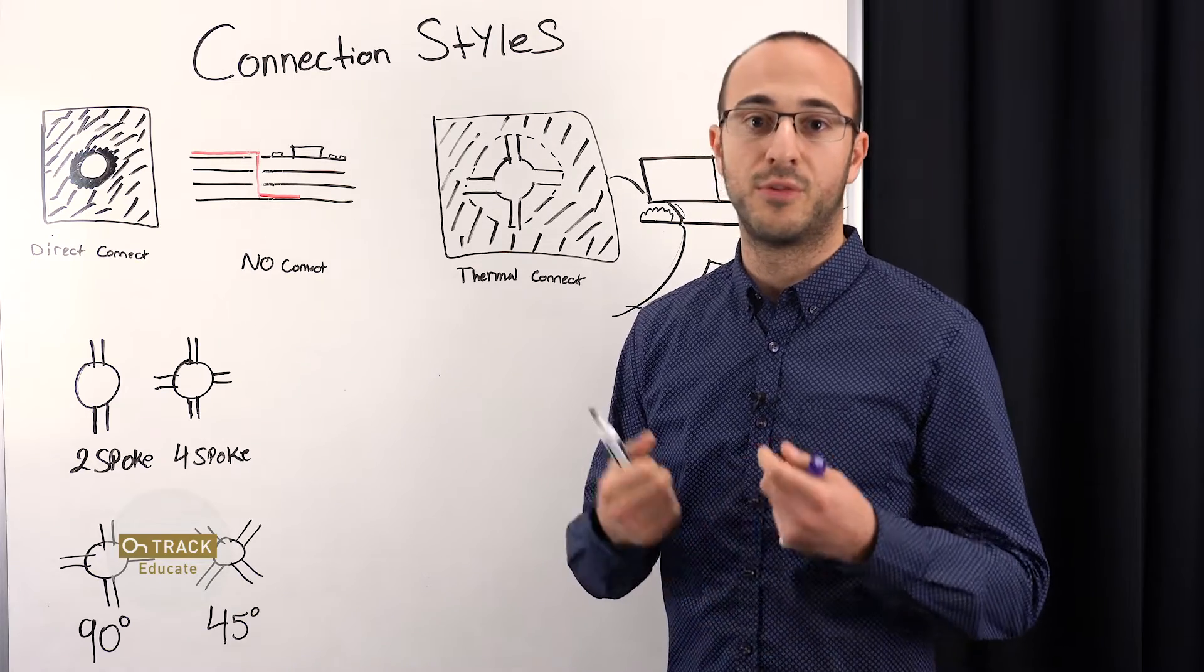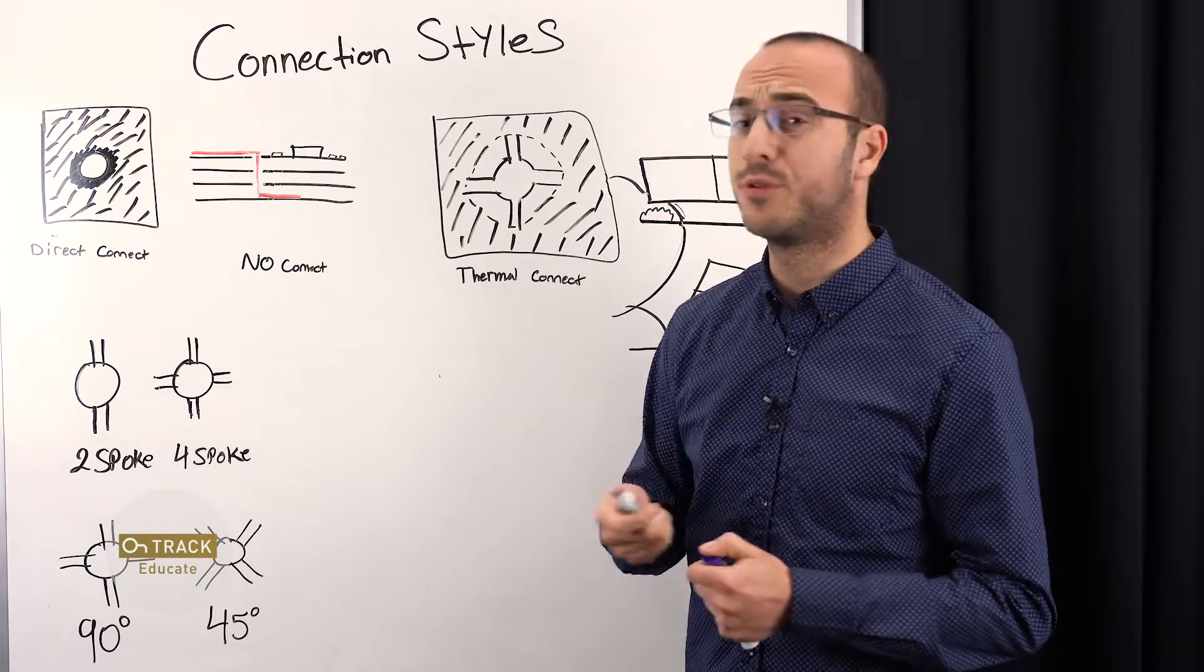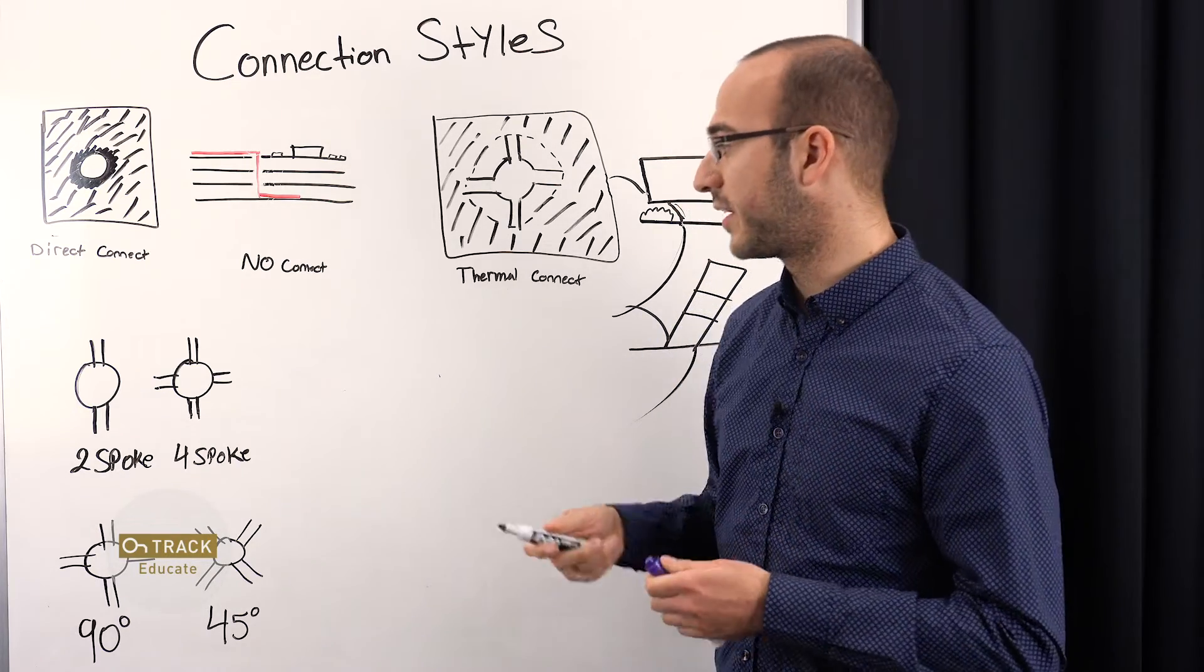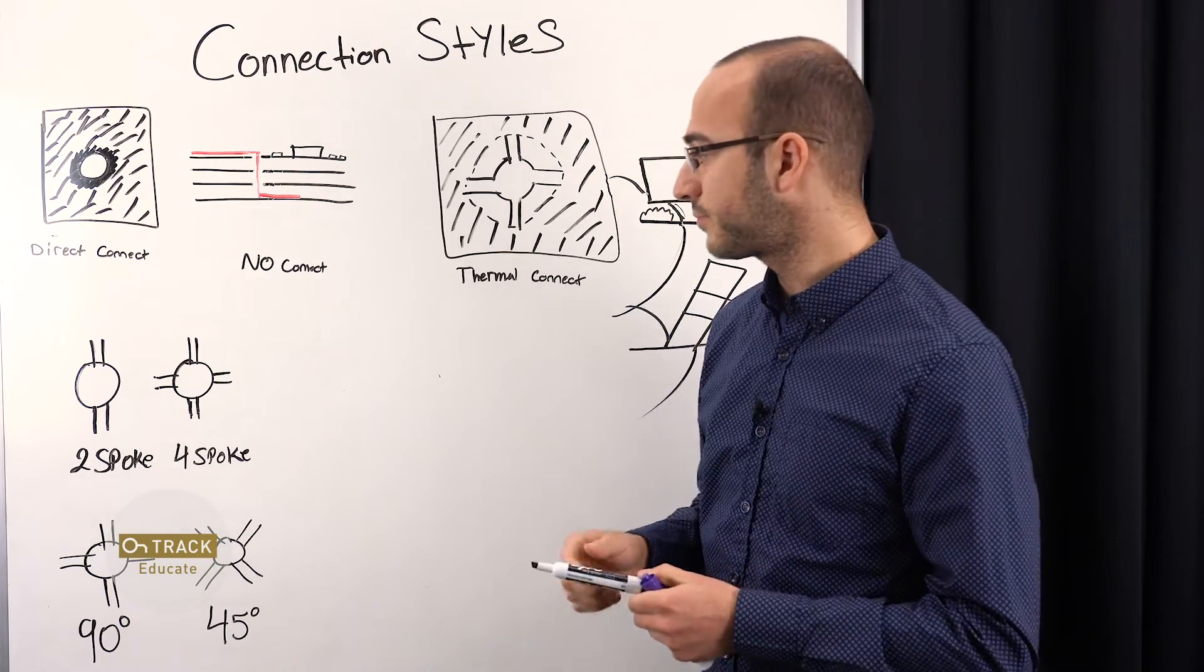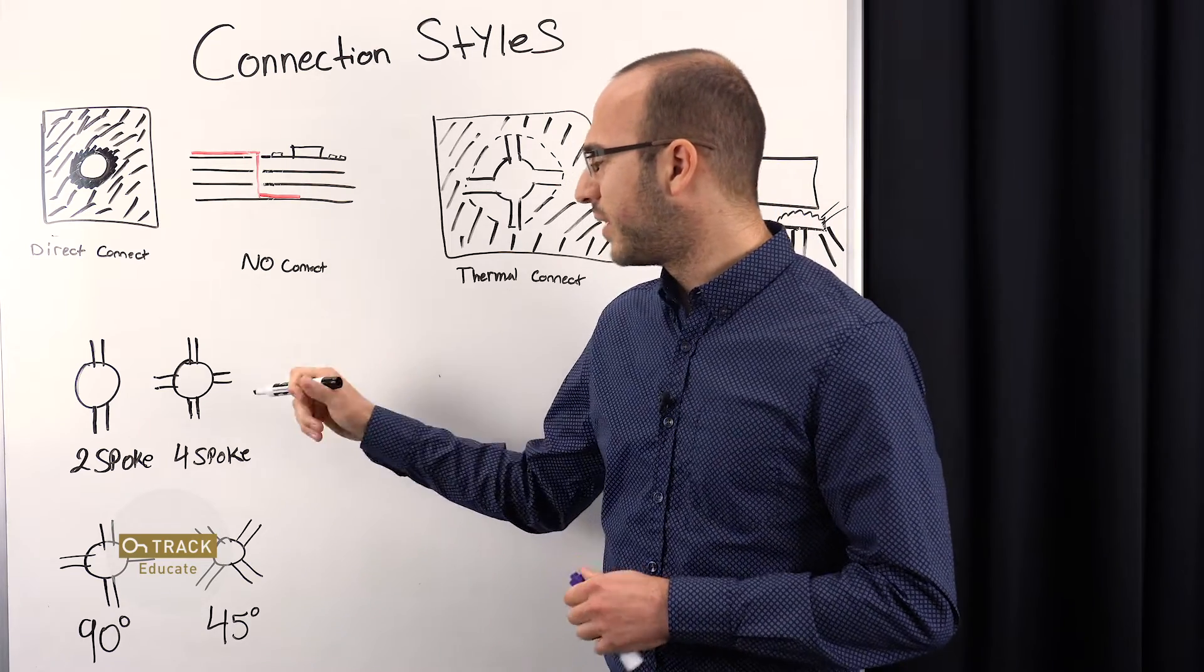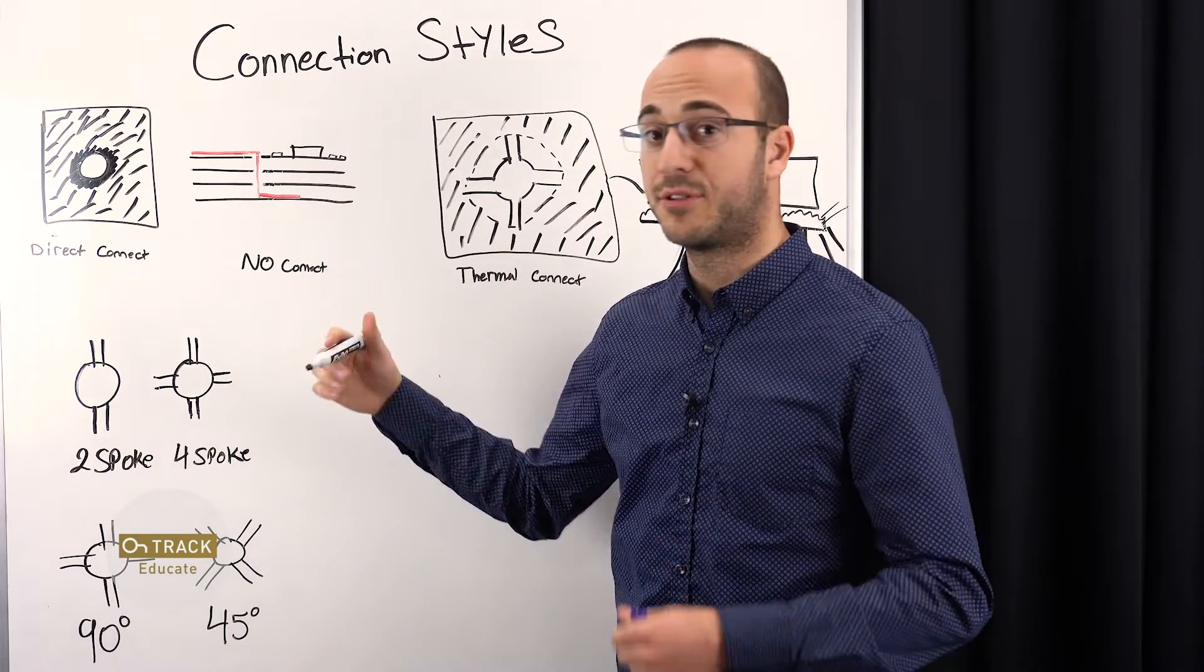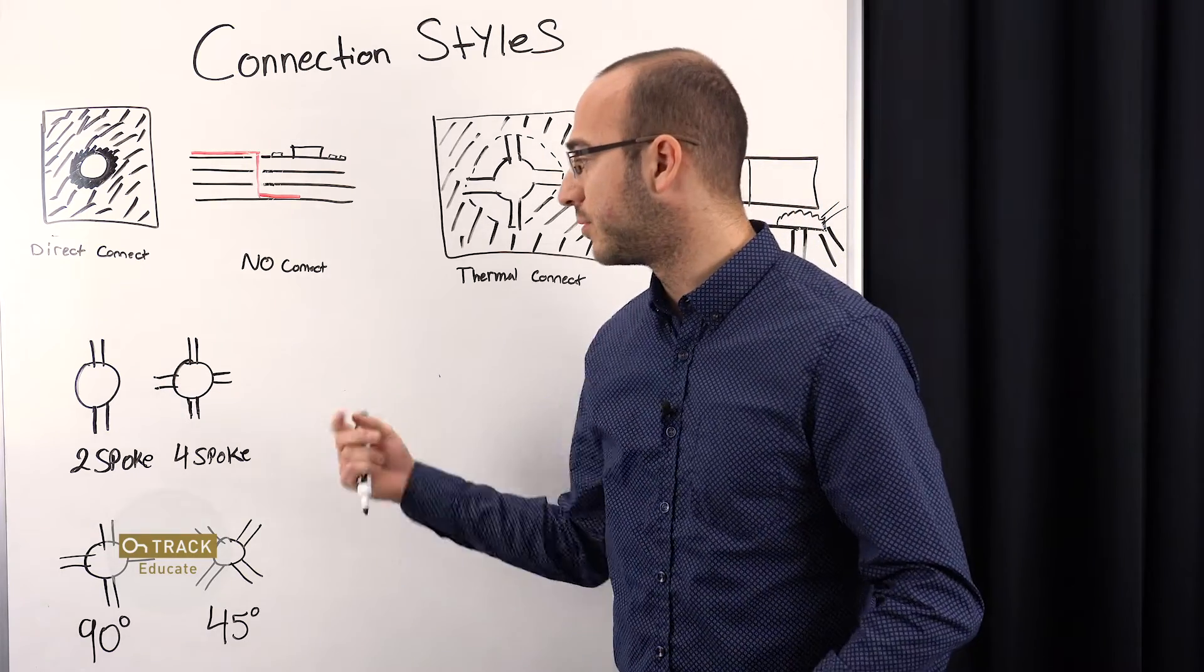And if you want to determine the width, you can use something like IPC 2152, or a calculator like Saturn, or even something like PDN Analyzer. And they could help you determine what a good number of spokes is and the width. And you want to make sure you get that right, because if you do not, you can create a fuse. If your spoke is too thin, it can't handle the current. It could basically become a fuse, burn up, and then the rest will burn up.